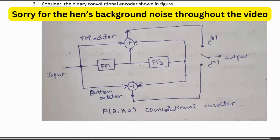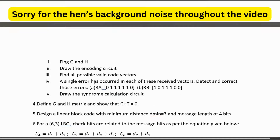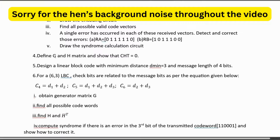The (2,1,2) convolutional encoder has one input, two flip-flops, a top adder, and a bottom adder. For a systematic (7,4) linear block code, a parity matrix is given — for example, [1 1 1; 1 1 0; 1 0 1; 0 1 1]. You are asked to find the generator matrix G and parity check matrix H, draw the encoding circuit, find all valid code vectors, detect and correct single errors in received vectors, and draw the syndrome calculation circuit.